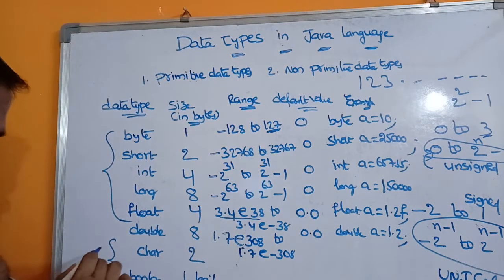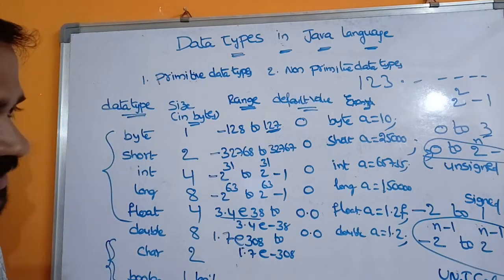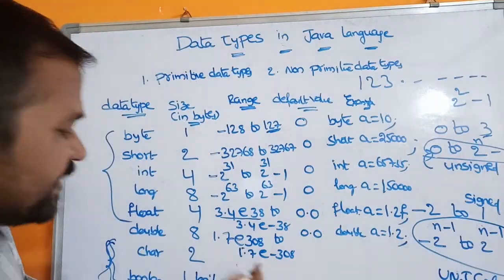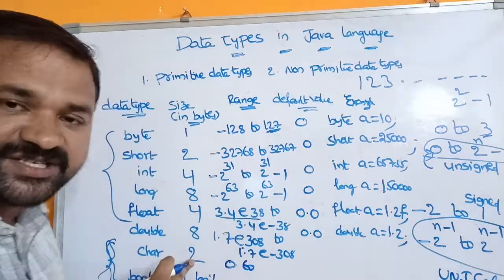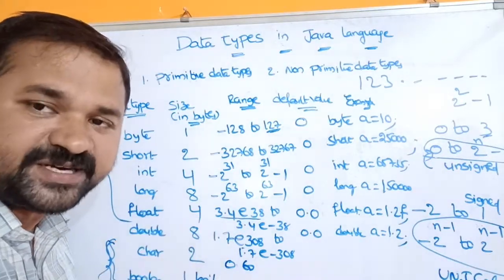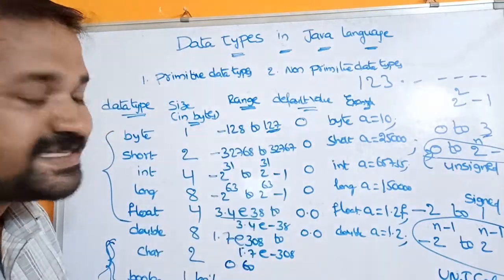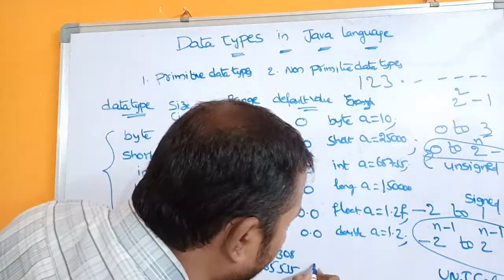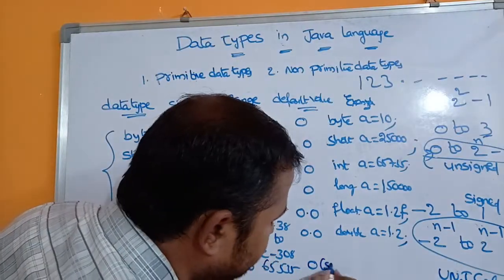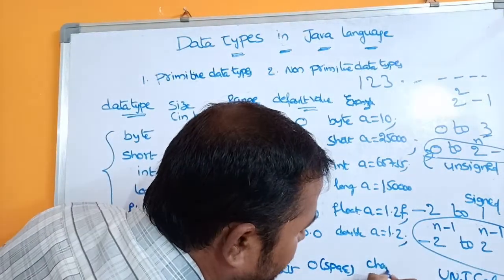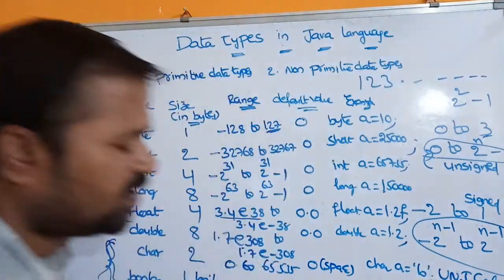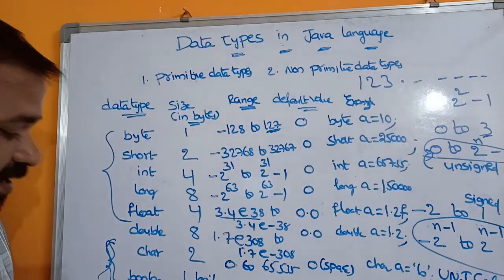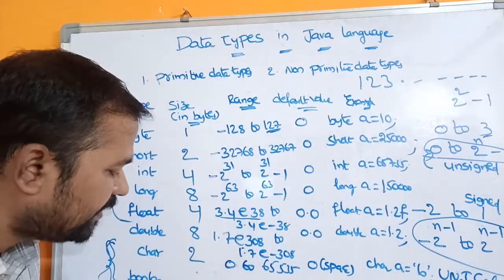The size of char is 2 bytes. Char and boolean are unsigned data types, so the formula is 0 to 2^n - 1. For char, 2 bytes = 16 bits, so 2^16 = 65,536 and 65,536 - 1 = 65,535. The range is 0 to 65,535. The default value is 0, which represents a space character. Example: char a = 'A' — within single quotation marks we can store an alphabet, digit, or symbol.